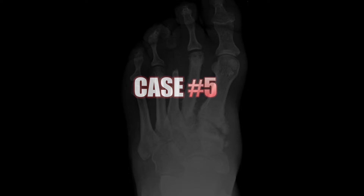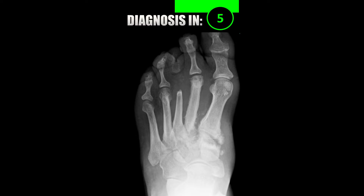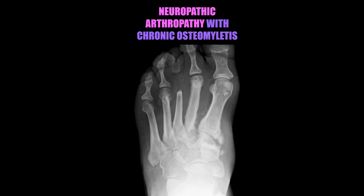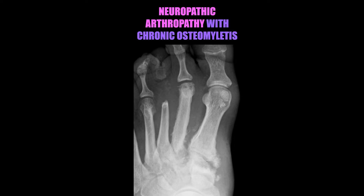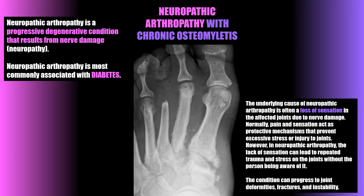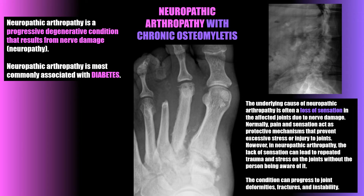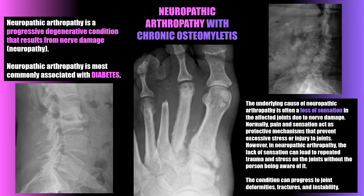Case number five is an example of neuropathic arthropathy with chronic osteomyelitis. There are hypertrophic changes to the first metatarsal-tarsal articulation as well as atrophic destruction of the third metatarsal-phalangeal joint. Neuropathic arthropathy is a progressive degenerative condition resulting from nerve damage, most commonly associated with diabetes. The underlying cause is often a loss of sensation in the affected joints, which normally acts as a protective mechanism. The lack of sensation can lead to repeated trauma and stress on the joints, progressing to joint deformities, fractures, and instability.